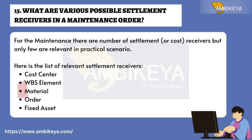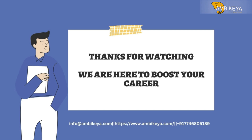Question number fifteen: What are the various possible settlement receivers in a maintenance order? There are a number of settlement or cost receivers, but only a few are relevant in practical scenarios. The relevant settlement receivers are: cost center, WBS element, material, order, and fixed asset. Thanks for watching — we are here to boost your career.